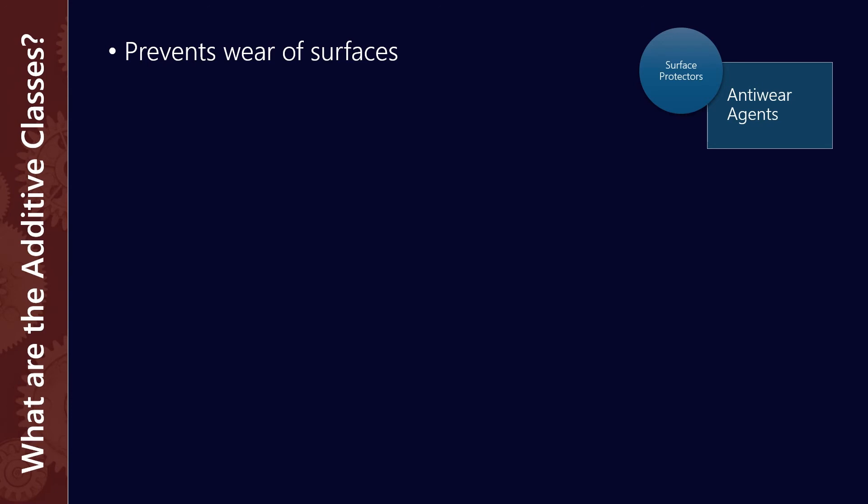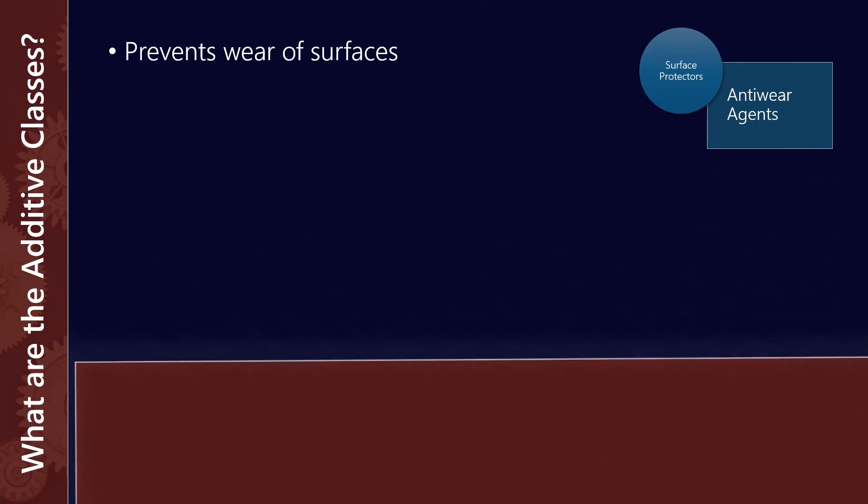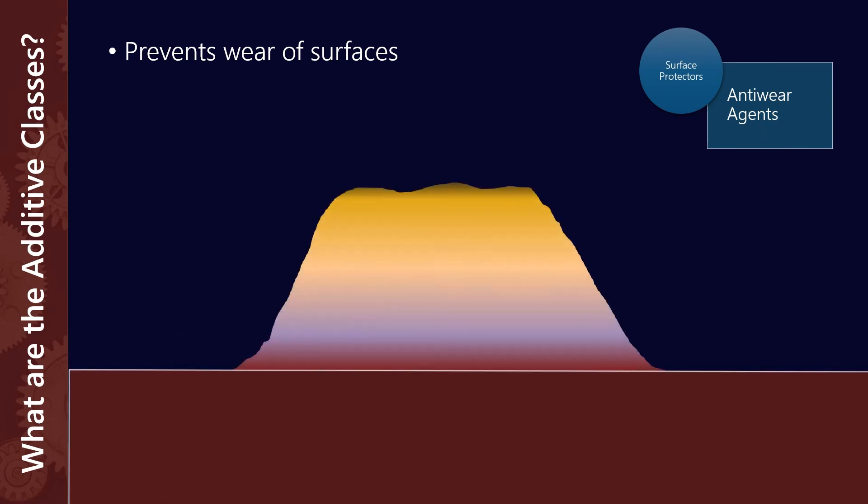Then we've got anti-wear agents. These prevent the wear of surfaces by forming a sacrificial barrier. ZDDP is probably the most well-known one, really common in engine oils, where it forms a 50 to 150 nanometer glass-like polyphosphate sacrificial layer between engine components. That helps protect particularly where there's boundary or mixed lubrication regimes around things like cams and cam followers.